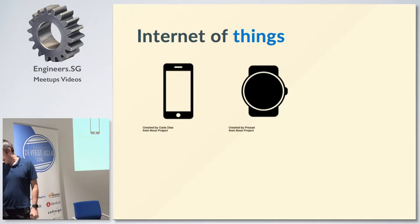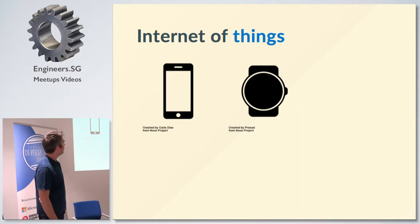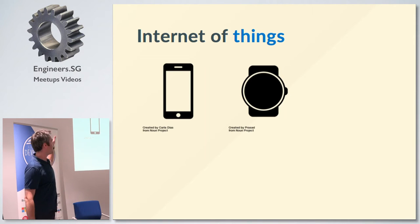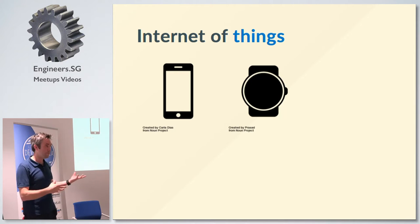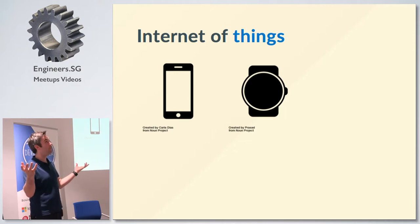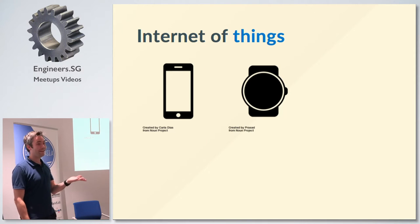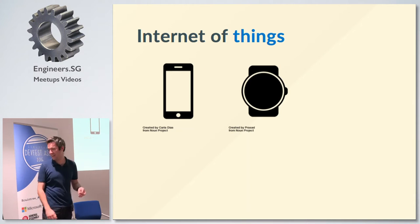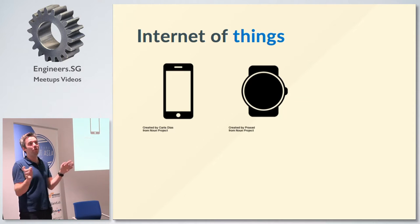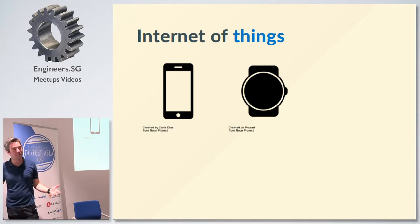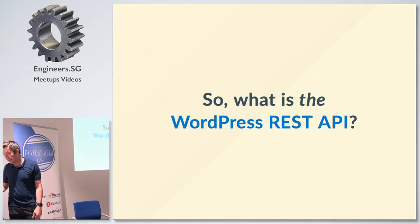Internet of things — there are the obvious things: mobile devices, watches, and then who knows what else is going to happen in the next ten years with fridges, cars, and other appliances that might want to use WordPress. Maybe a fridge could have a list of products inside it and link up with Amazon. We've got the tip of the iceberg right now, so it's good for WordPress to be future-proof.